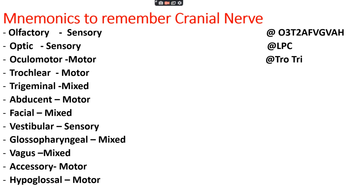We also need to remember whether each cranial nerve is sensory, motor, or mixed. The order is: sensory, sensory, motor, motor, mixed, motor, mixed, sensory, mixed, mixed, motor, motor — corresponding to olfactory, optic, oculomotor, trochlear, trigeminal, abducent, facial, vestibular, glossopharyngeal, vagus, accessory, and hypoglossal respectively.